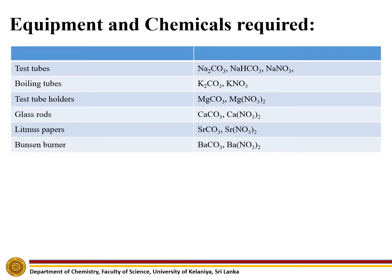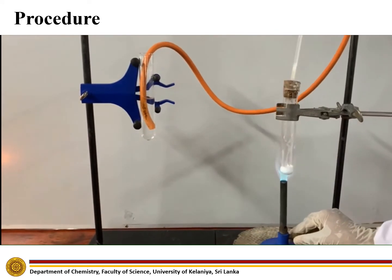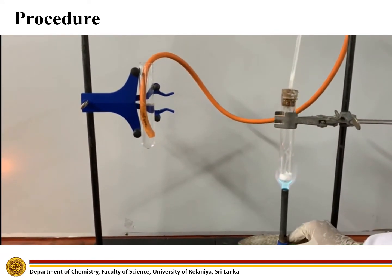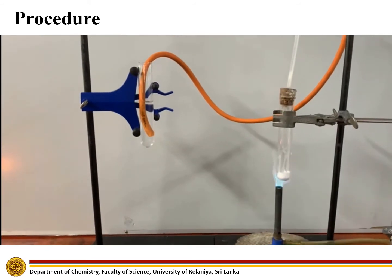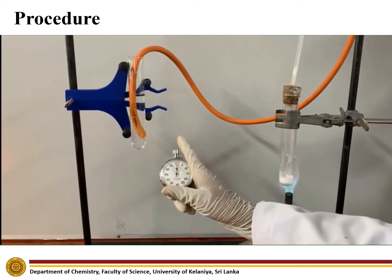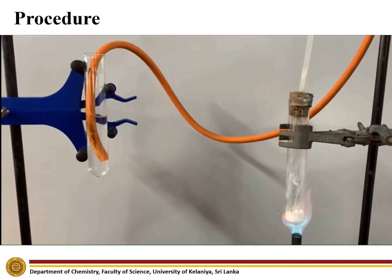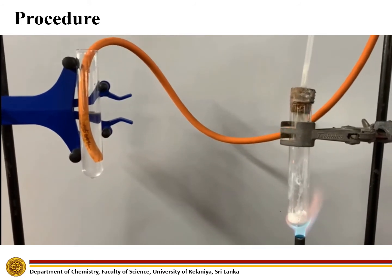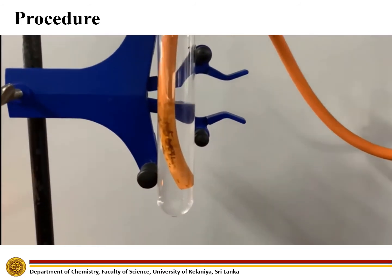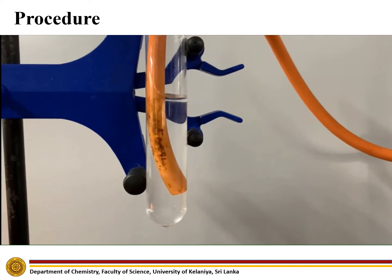Equipment and chemicals required. Procedure: You have provided a sodium carbonate sample. Heat it using the Bunsen burner and measure the time it takes to turn lime water milky. Pass the gas through a lime water solution using a delivery tube. The colour was not changed. Do this for potassium carbonate too.